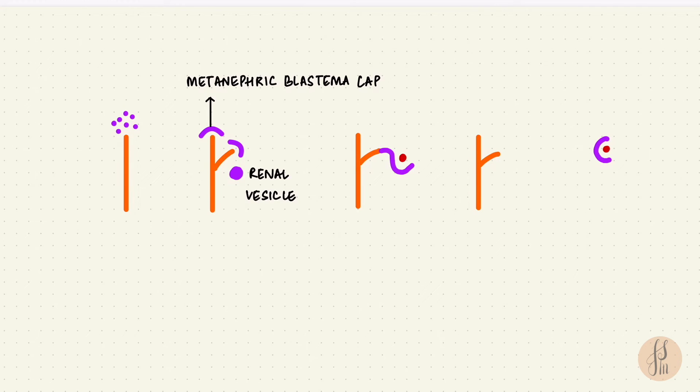The rest of the S becomes the renal tubule. They lengthen and they form the proximal convoluted tubule, the loop of Henle, and the distal convoluted tubule. So we finally got a nephron.